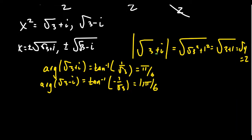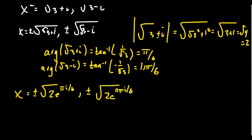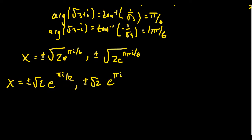Revisiting our numbers from above, our solutions look like x equals plus or minus the square root of 2 e to the pi i over 6, and plus or minus the square root of 2 e to the 11 pi i over 6. Taking the square root is the same as taking the 1/2 power, so we divide the angle's denominator by 2. Our solutions become x equals plus or minus root 2 times e to the pi i over 12, and plus or minus root 2 times e to the 11 pi i over 12.